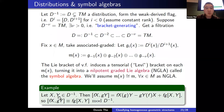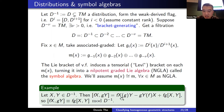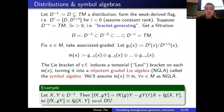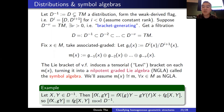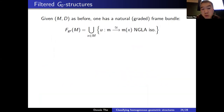The operation becomes tensorial (bilinear over functions) because when we take brackets of sections of D⁻¹ and mod out by the previous distribution D⁻², the function-dependent terms cancel — this is called the Levi bracket. We assume a strong regularity condition: all symbol algebras at each point should be isomorphic to some fixed model nilpotent graded Lie algebra m.